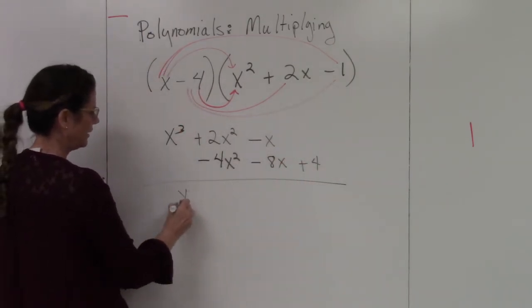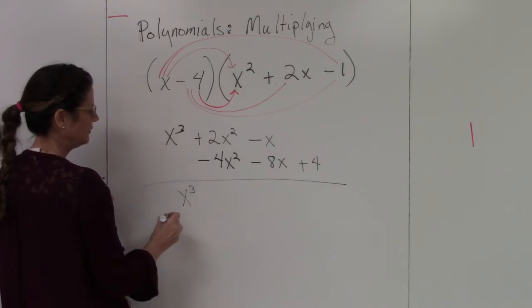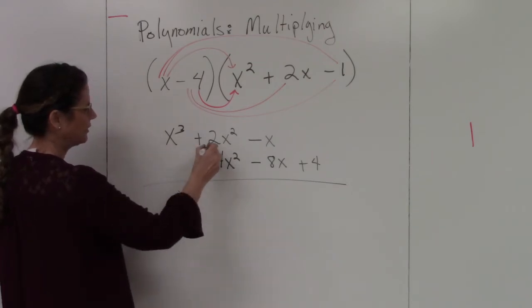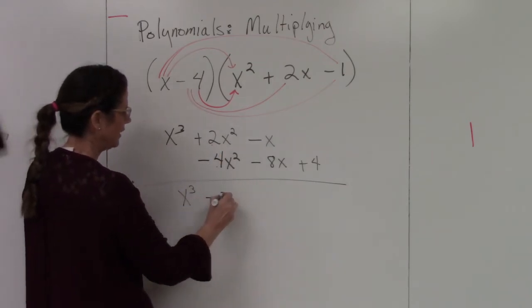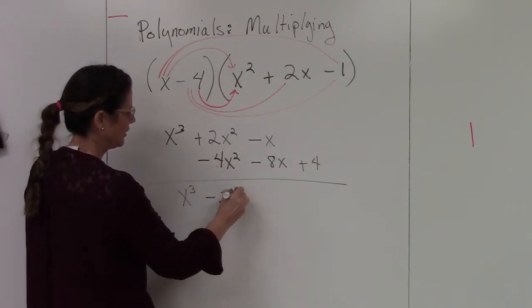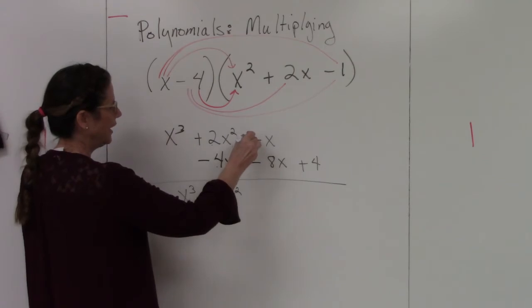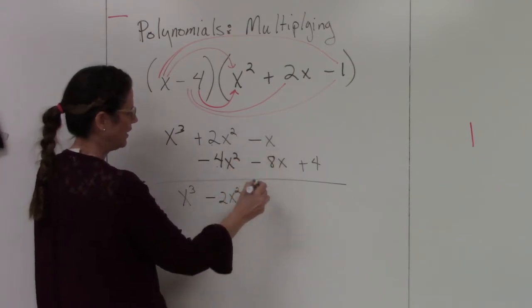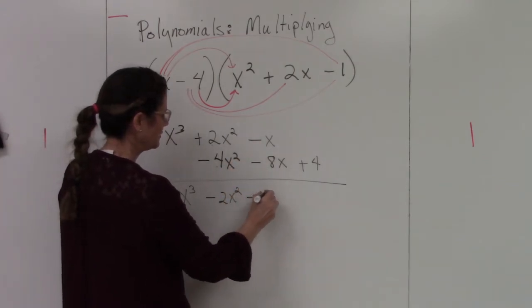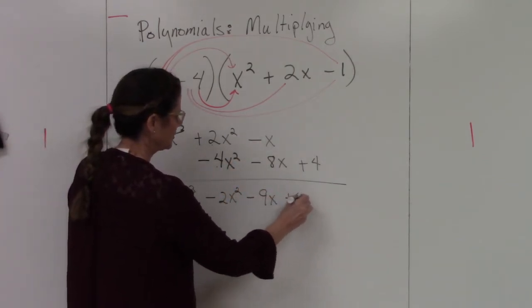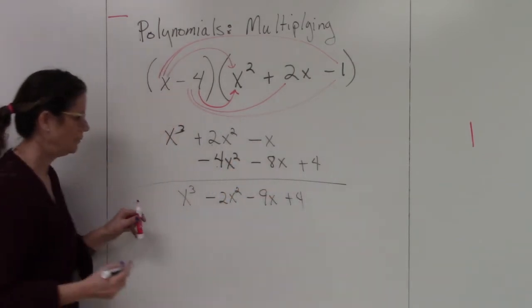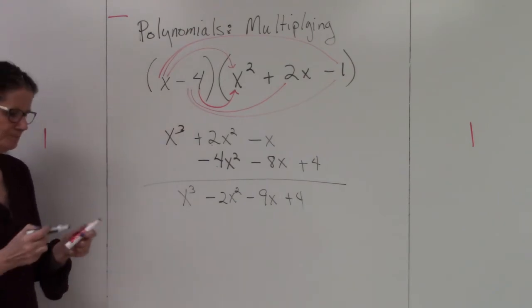Negative 4 times negative 1 is positive 4. Now I can add everything. Nothing to add the x cubed to. 2x squared minus 4x squared is negative 2x squared. Negative x and negative 8x is negative 9x. And then plus 4. Done.